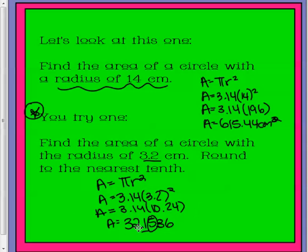They want us to round this to the nearest tenth, so the 5 tells the 1 to become a 2. So our area is going to be about 32 and 2 tenths centimeters squared.